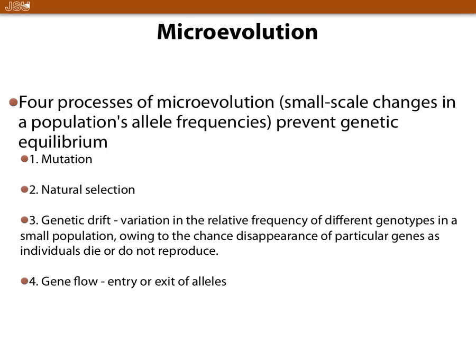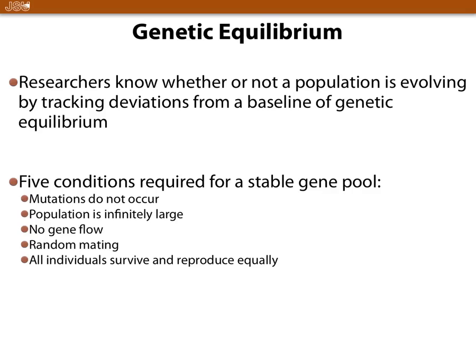You should know the four processes that drive evolution and the five conditions of genetic equilibrium. Genetic equilibrium is not something that actually happens — it's theoretical. We do know there are changes over time, so all populations are evolving, some very slowly and some very rapidly, but all are evolving on some level.